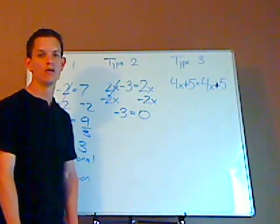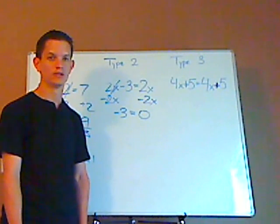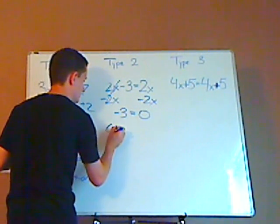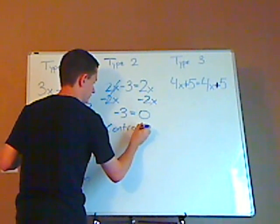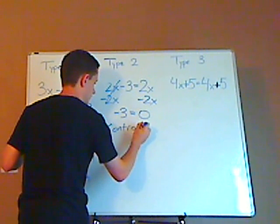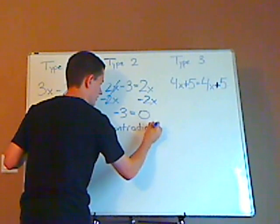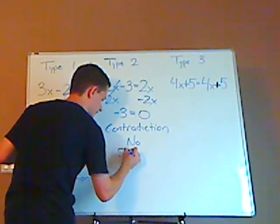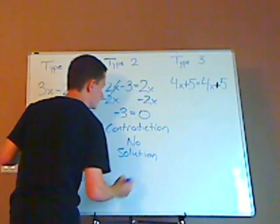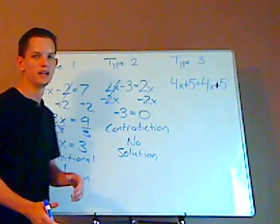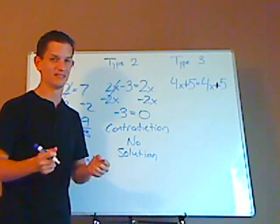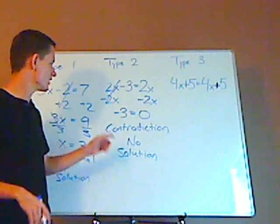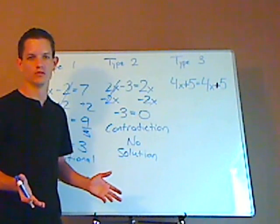that leaves you with negative three equals zero. Now is that true or false? The answer is false. So since it's false, this is a contradiction, which means that there's no solution. So when you do a linear equation, and the x's turn out to cancel out, and one side does not equal the other side, well, you have a contradiction, and that means that there's no solution.